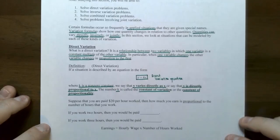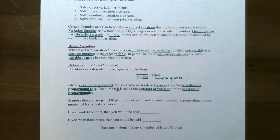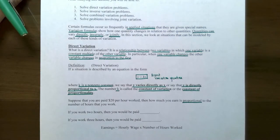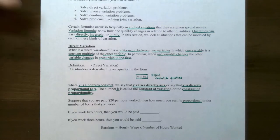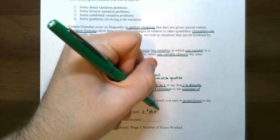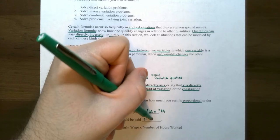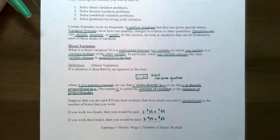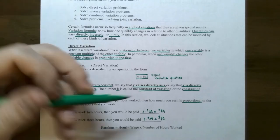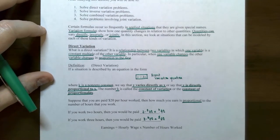Here's an example of direct variation. Suppose that you're paid $20 per hour. Then how much you earn is proportional to the number of hours that you work. If you work two hours, you are paid two times $20 per hour, so $40. If you work three hours, you are paid $60. Notice as the hours increase, so does the amount of money that you earn. This is called a direct variation between the amount of money earned and the number of hours worked.